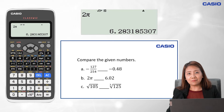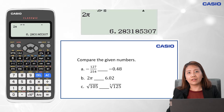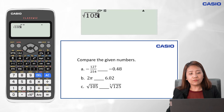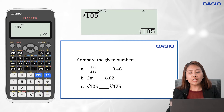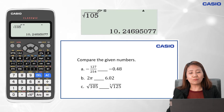For the last item C, to compare the square root of 105 and the cube root of 125, we can change both to decimal. We key in the square root symbol followed by 105, then press the equal sign, change it to decimal by clicking SD, and the value is approximately 10.25.